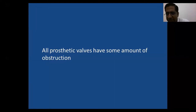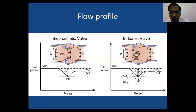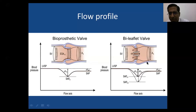All prosthetic valves have some intrinsic obstruction — we cannot expect them to behave like native valves. The flow profile across a prosthetic valve differs by type. In a bileaflet metallic valve, velocity through the central orifice is higher and pressure drop is greater than through the lateral orifices. The flow profile is generally better in a bioprosthetic valve compared to a metallic valve.